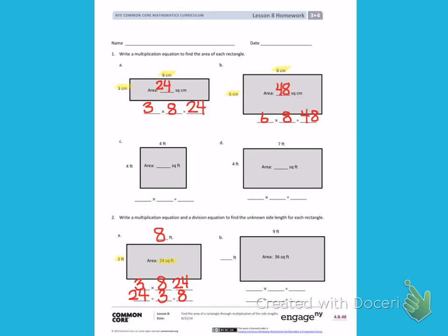You will do the exact same thing on letter B, this time using the area of 34 square feet and one side length, 9.